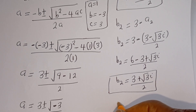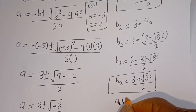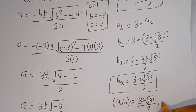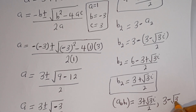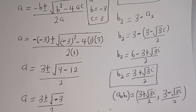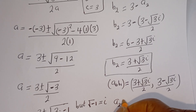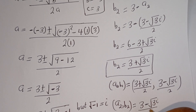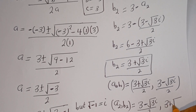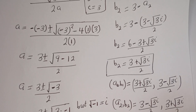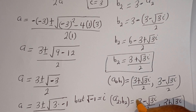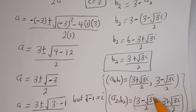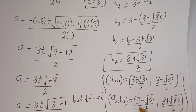Therefore, our final answers are: A1 and B1 equal (3 plus root 3i) over 2 and (3 minus root 3i) over 2 respectively. A2 and B2 equal (3 minus root 3i) over 2 and (3 plus root 3i) over 2 respectively. You can see that A1 is equal to B2, and B1 is equal to A2.